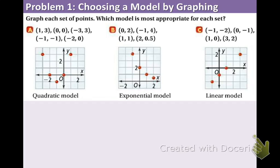Example one, choose a model by graphing. In example one part a we have five coordinate points. Take a moment to plot these coordinate points on your graph. You will note that when you plot these points it graphs as a parabola. Because it looks like a parabola this is a quadratic model.